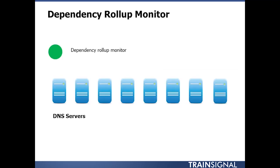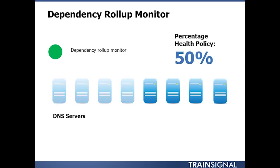Previously I talked about a bank of DNS servers with an aggregate roll-up monitor. If you have a worst state health policy, once one of those DNS servers goes down then the entire health of the group is going to go red. With a dependency roll-up monitor, you can say: I've got eight DNS servers — if four of them are still available, everything's good. In that case you could use a dependency roll-up monitor to define a 50 percent threshold.